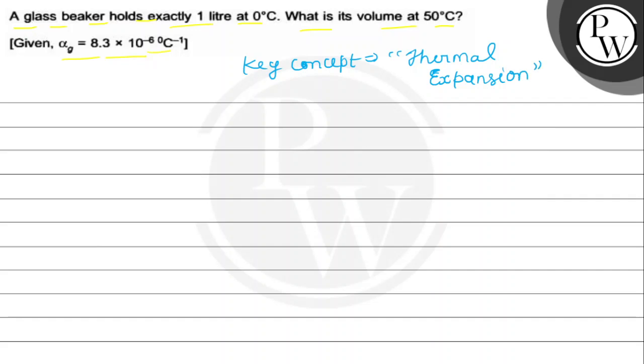We know that gamma, the volume expansion coefficient, is equal to 3 alpha, which equals 3 times 8.3 into 10 power minus 6. This gives us 24.9 into 10 power minus 6 per degree Celsius.